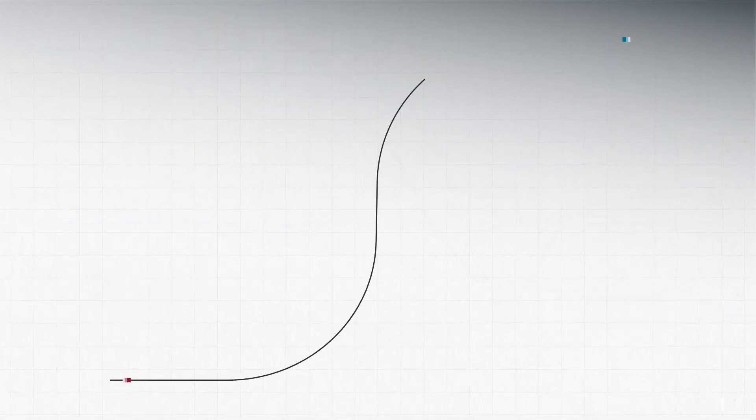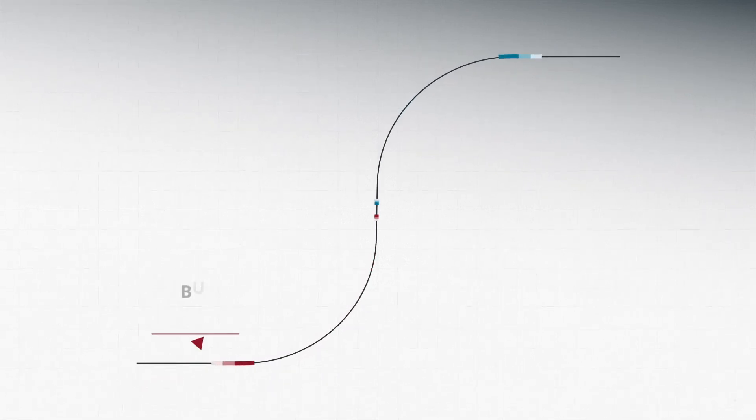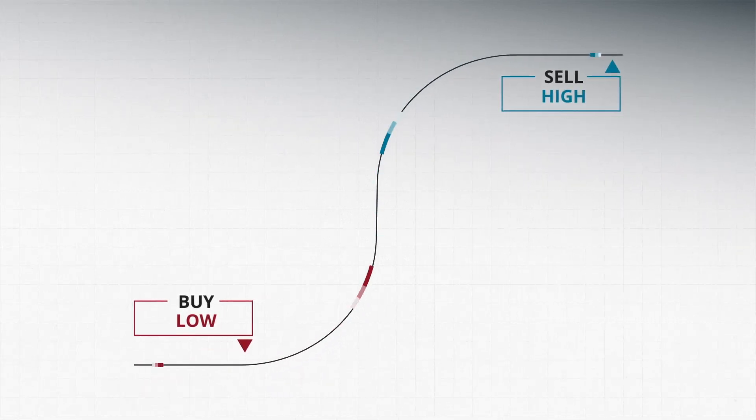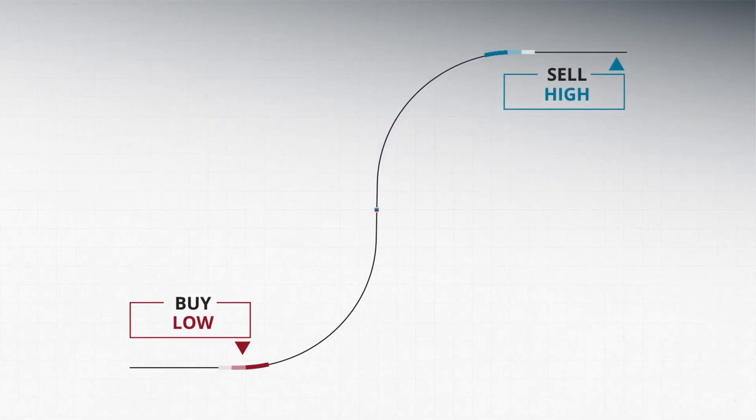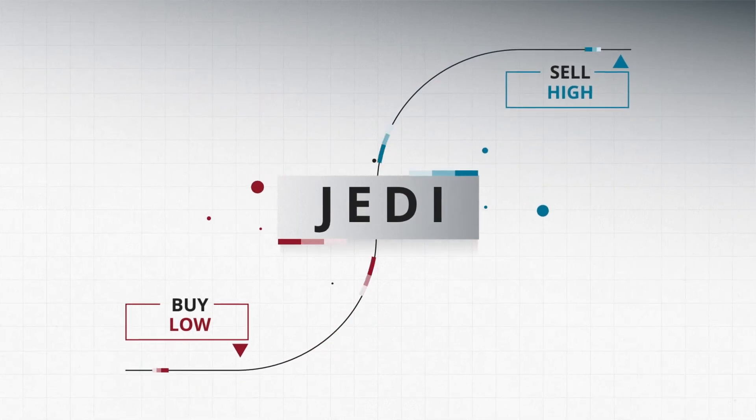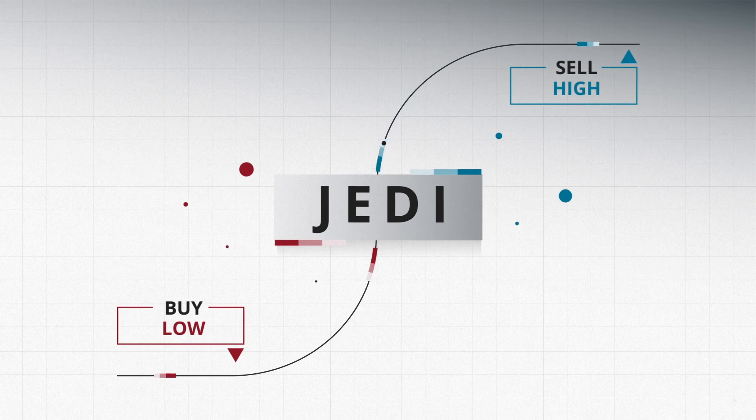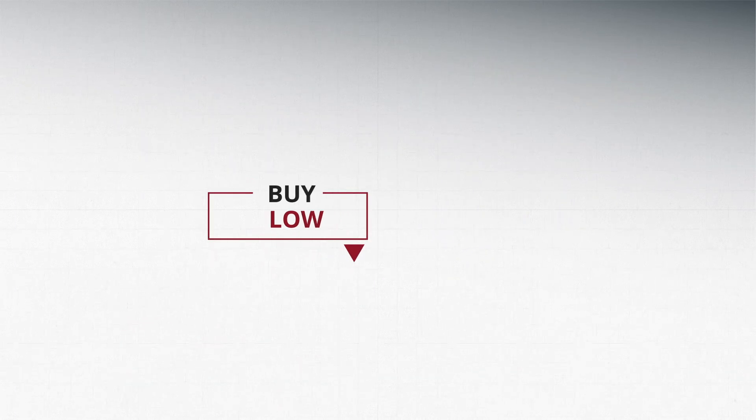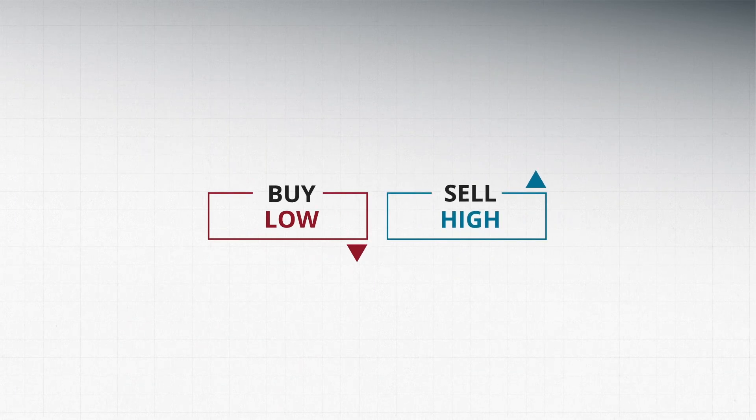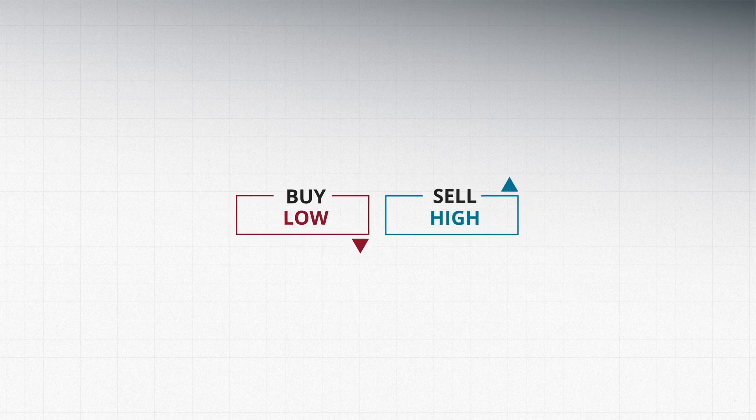By embracing the JEDI code to systematically replicate buying low and selling high, investors have a potentially valuable opportunity to grow wealth by removing human emotions and the pitfalls of overconfidence. Buy low, sell high. It sounds simple, and maybe now it can be.